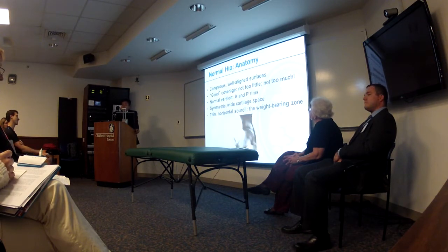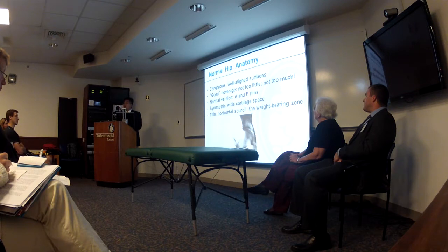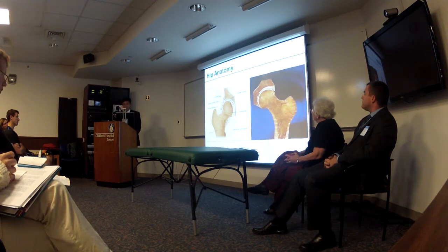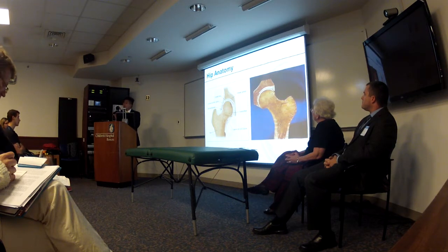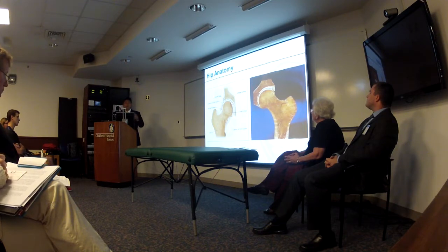The normal hip anatomy involves a ball-and-socket joint — you want good coverage, not too much and not too little. The most important structure in the hip is the cartilage inside. That's the stuff we cannot save, the stuff that leads to arthritis, and what we're trying to prevent from getting worse. The labrum is like a canary — once it's torn or injured, the cartilage underneath has already been damaged to some degree. Whether it's bone, labrum, or anything else, it ultimately comes down to the cartilage. That's what we're trying to save.